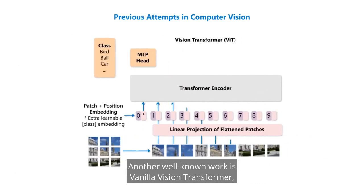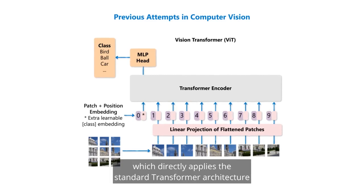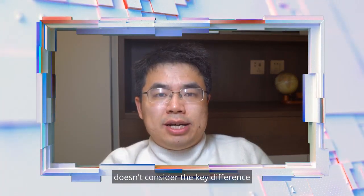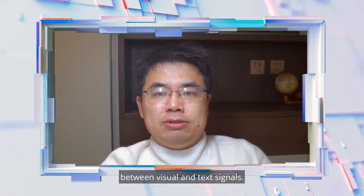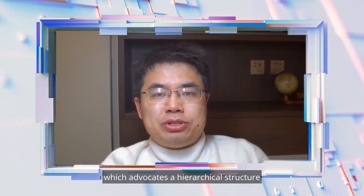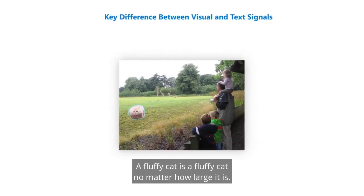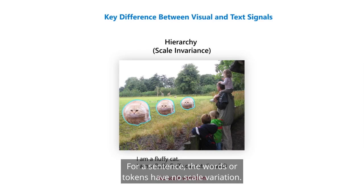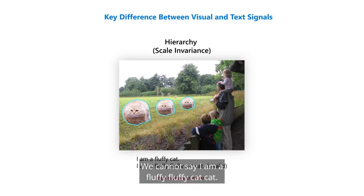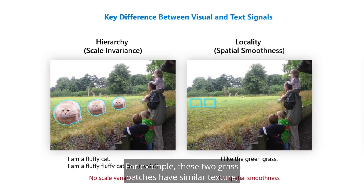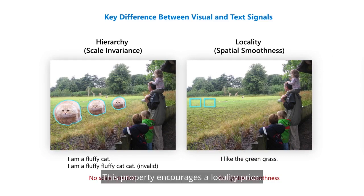Another well-known work is the vanilla Vision Transformer, which directly applies the standard transformer architecture used in NLP to the problem of computer vision. We argue that this vanilla Vision Transformer doesn't consider the key differences between visual and text signals. First, a visual object can be at different scales, which motivates a hierarchical structure in design — a fluffy cat is a fluffy cat no matter how large it is. For a sentence, the words or tokens have low scale variation. Second, visual signals are usually smooth in space. For example, two grass patches have similar texture and are both colored green. This property encourages a locality prior.